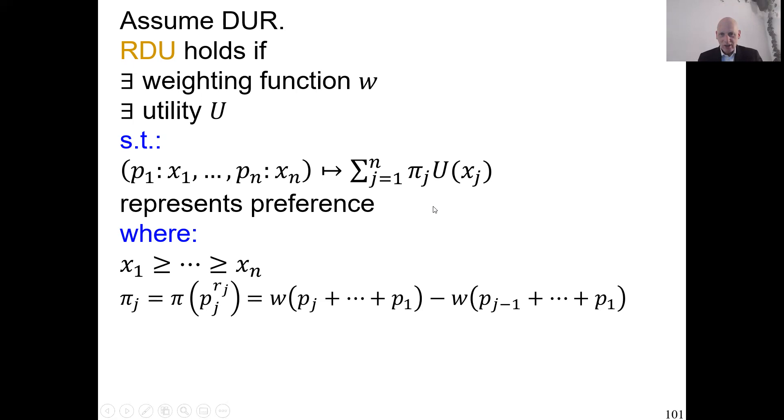Also, you can notice that these decision weights, they add to one. So those numbers, if you add them all, you see that you get w of one minus w of zero is always one. And that's something a good stochastic dominance satisfying theory should satisfy. This is, in fact, a convex combination of the utilities of the outcomes, which is mathematically reassuring. The decision weight of an outcome, I just write it like this. Well, you have to know it doesn't depend just on the outcome. It depends on the rank probability, but often it's understood what it is.